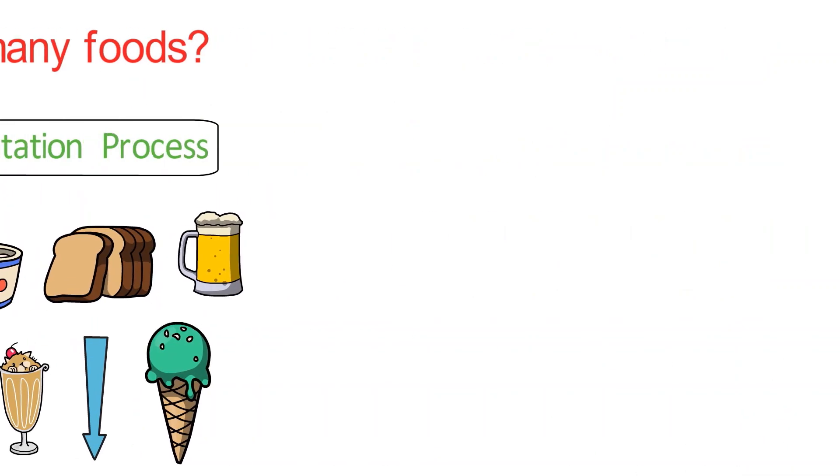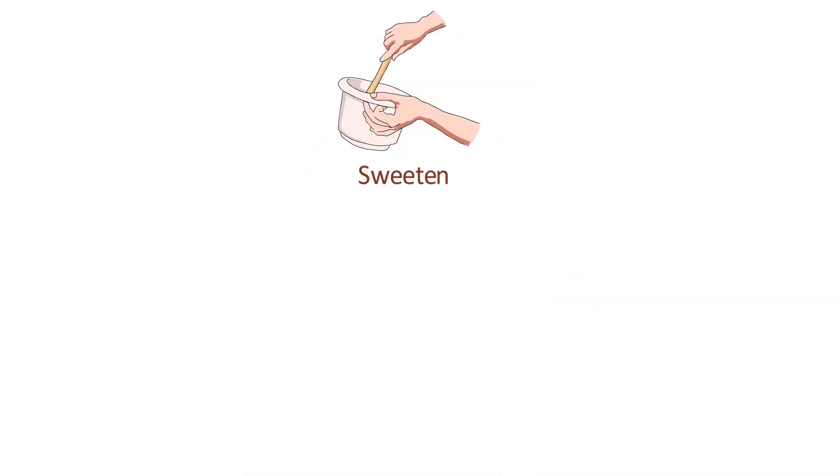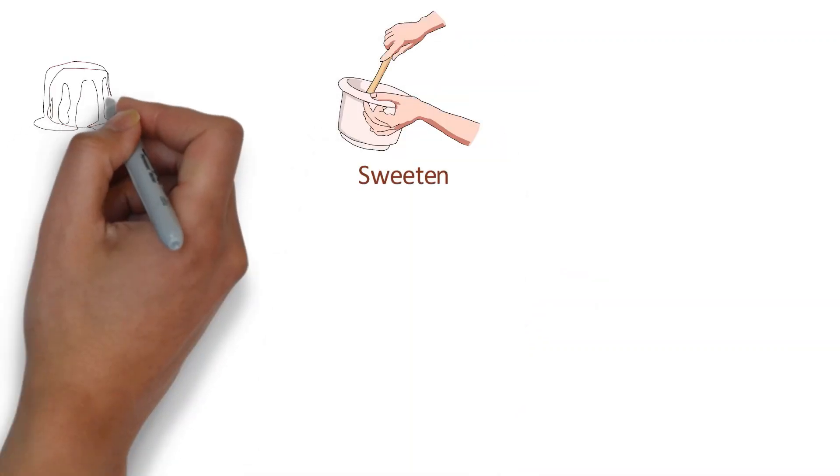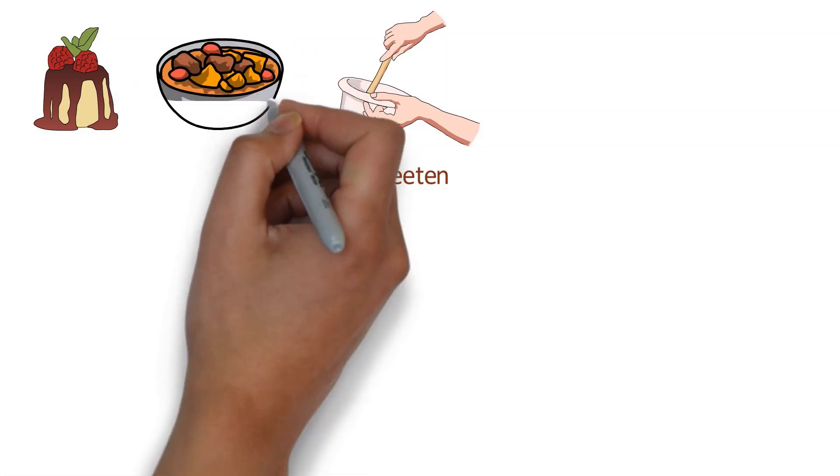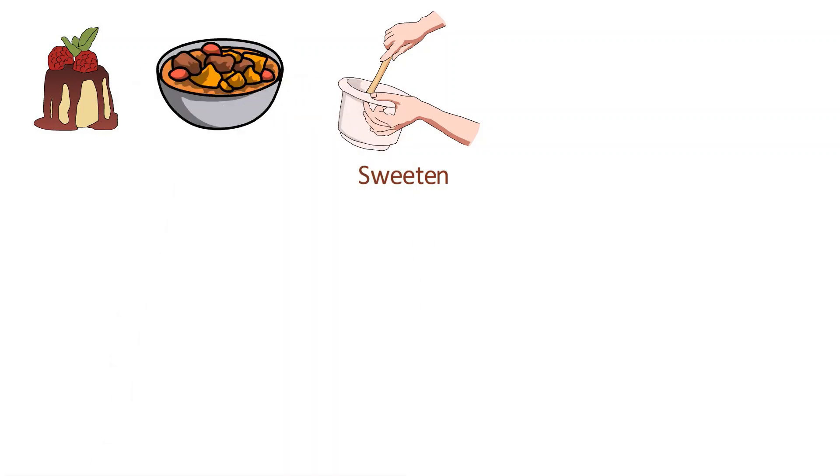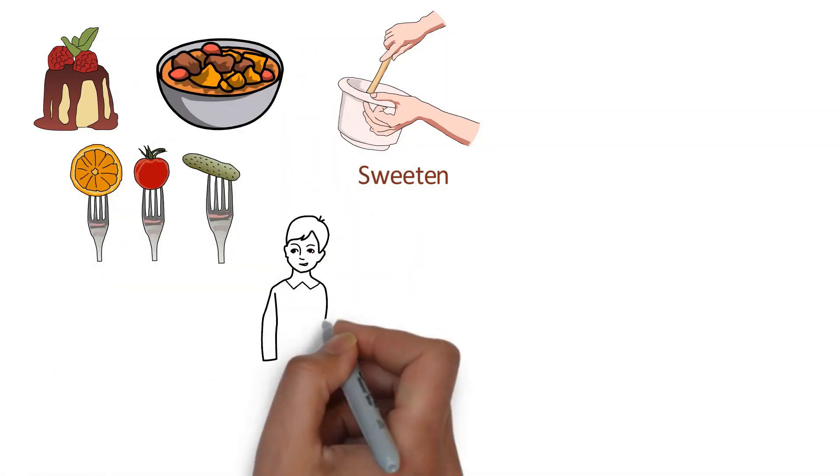The last, and most obvious, reason sugar is added to food is to sweeten it. Sweetness improves on the palatability of food, and is one of the few tastes we are born with. This is why sugar is frequently added to healthy foods marketed towards children.